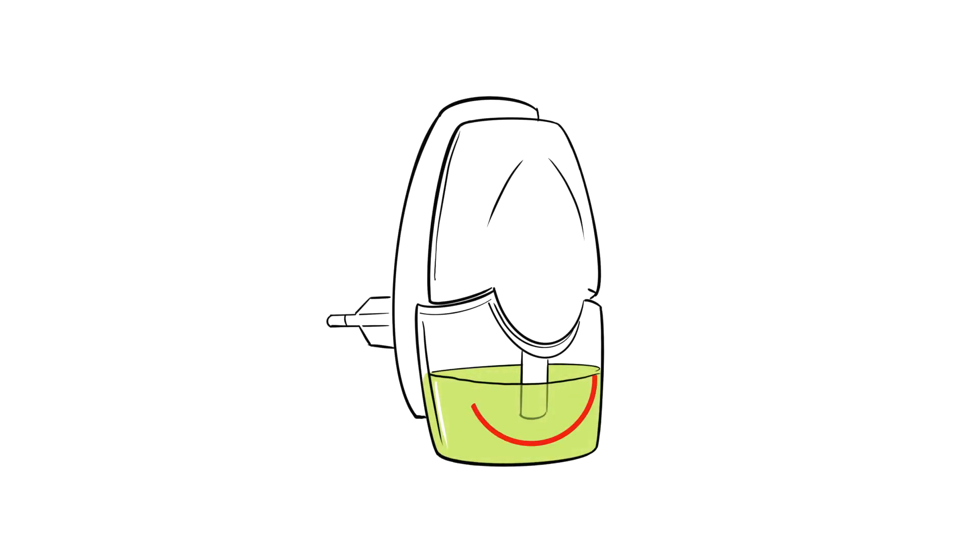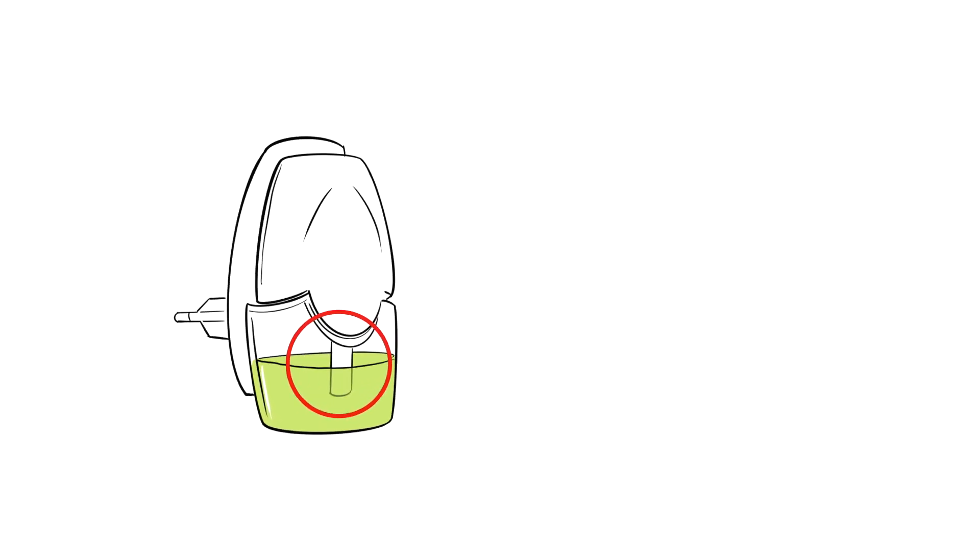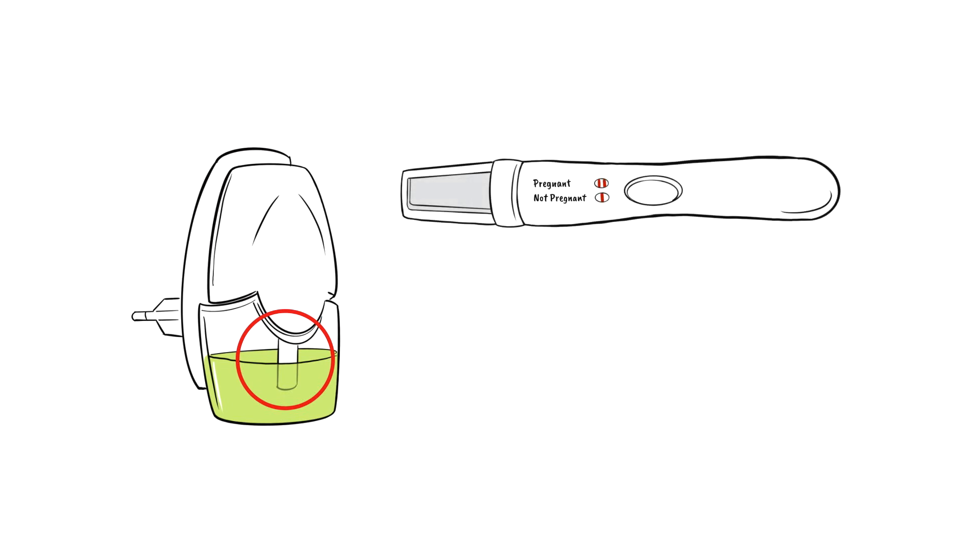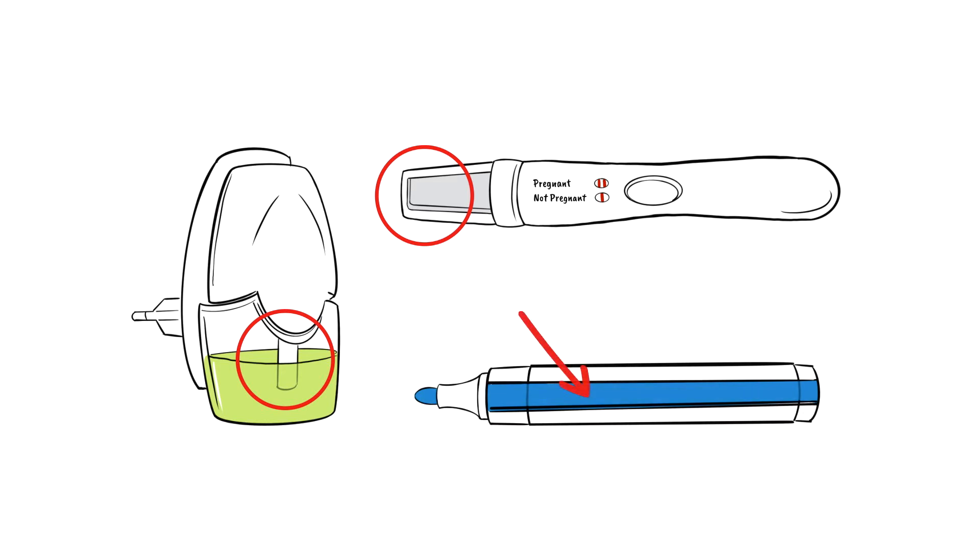You can see wicking in action in plug-in air fresheners that disperse fragrance, in devices that collect a diagnostic test sample, and in the ink reservoirs of markers or inkjet printers.